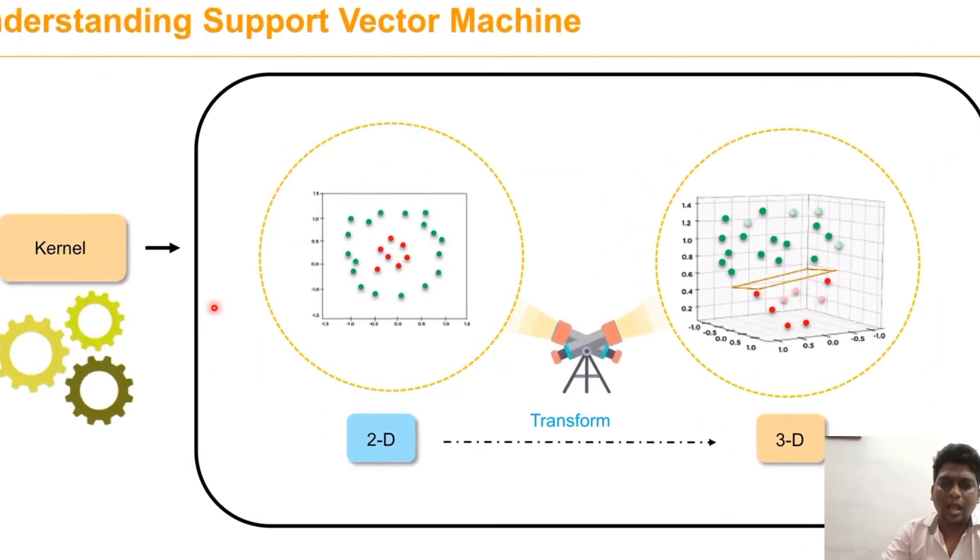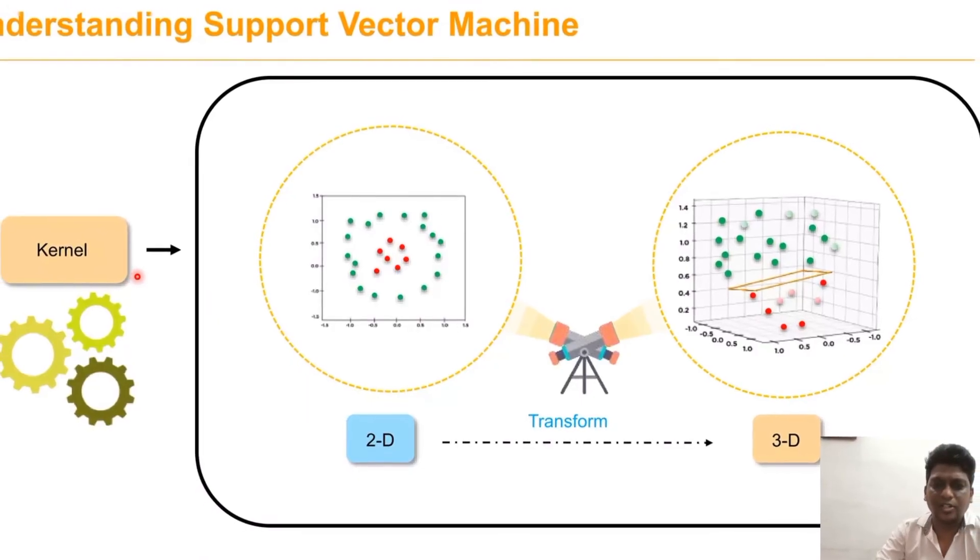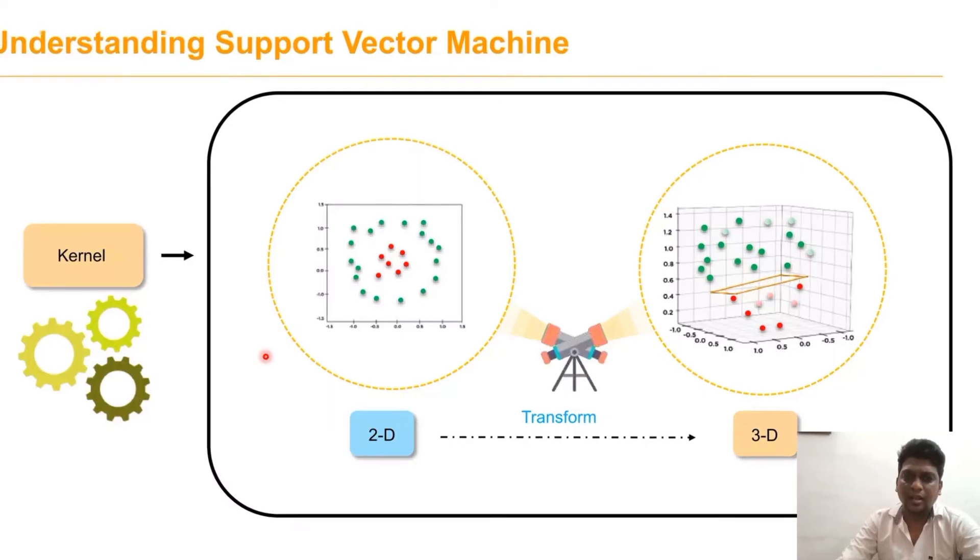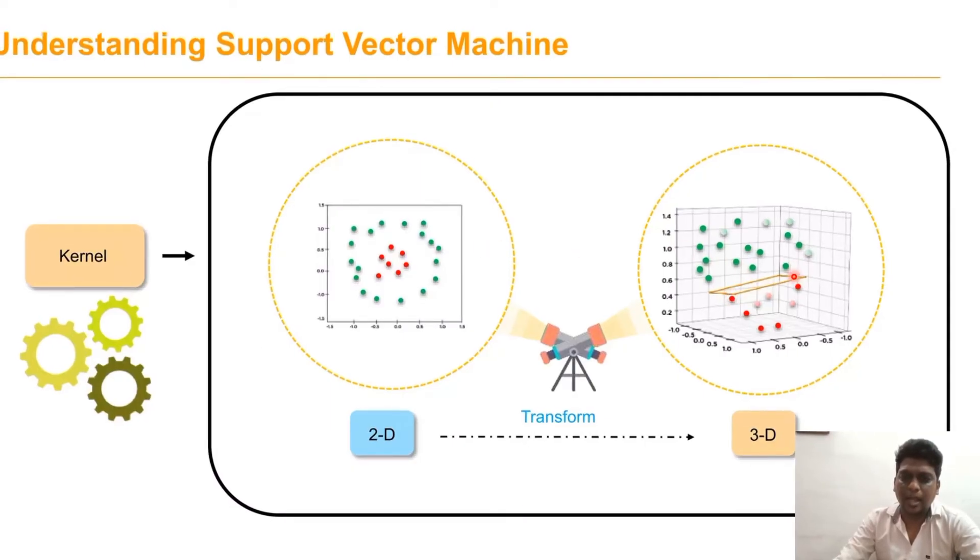Even though if we segregate them into two classes, it is highly impossible to define the classes correctly. At that case, again using the kernel function, we transform them into three-dimensional data. This is the optimal hyperplane that segregates the data into two classes. Here also, the distance margin has to be as far as possible.